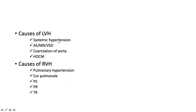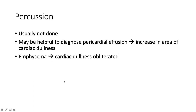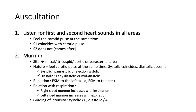Causes of left ventricular hypertrophy: systemic hypertension, aortic stenosis, mitral regurgitation, ventricular septal defect, coarctation of the aorta, and HOCM. Causes of right ventricular hypertrophy: pulmonary hypertension, cor pulmonale, pulmonary stenosis, pulmonary regurgitation, and tricuspid regurgitation. Left parasternal heave technique: place the flat of your palm in the left parasternal area, apply gentle sustained pressure — this speaks to right ventricular hypertrophy. Palpable pulmonary component of the second heart sound speaks to pulmonary hypertension. Epigastric pulsation speaks to right ventricular hypertrophy. Percussion is not routinely done — may help diagnose pericardial effusion by increased area of cardiac dullness, and in COPD/emphysema, cardiac dullness is obliterated.